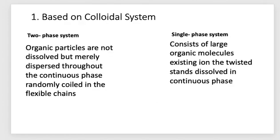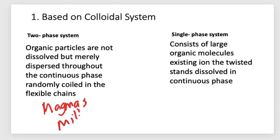There are two types: the two-phase system and the single-phase system. For the two-phase system, organic particles are not dissolved but merely dispersed throughout the continuous phase, randomly coiled in flexible chains. If the gel contains small discrete particles, the gel is called a two-phase system. They are usually referred to as magmas or milk.